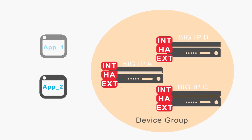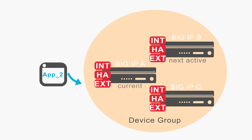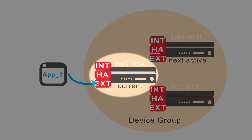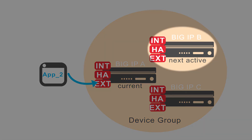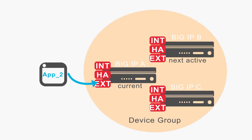At any point in time, one device in the group is active for a given application flow. This device is known as the current device for that flow. But if it goes down, the BIG-IP system has the next active device waiting in the wings, so to speak, ready to accept that application flow on failover.